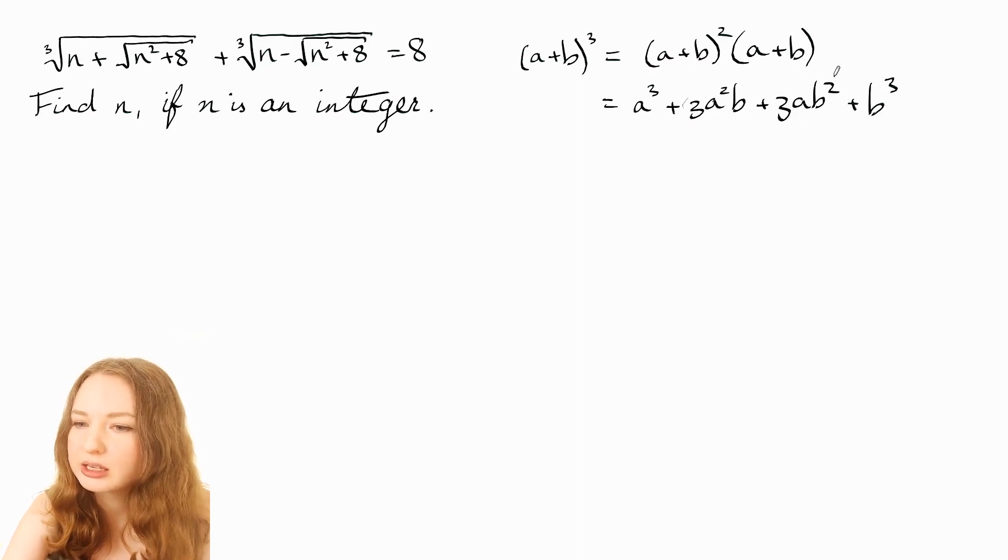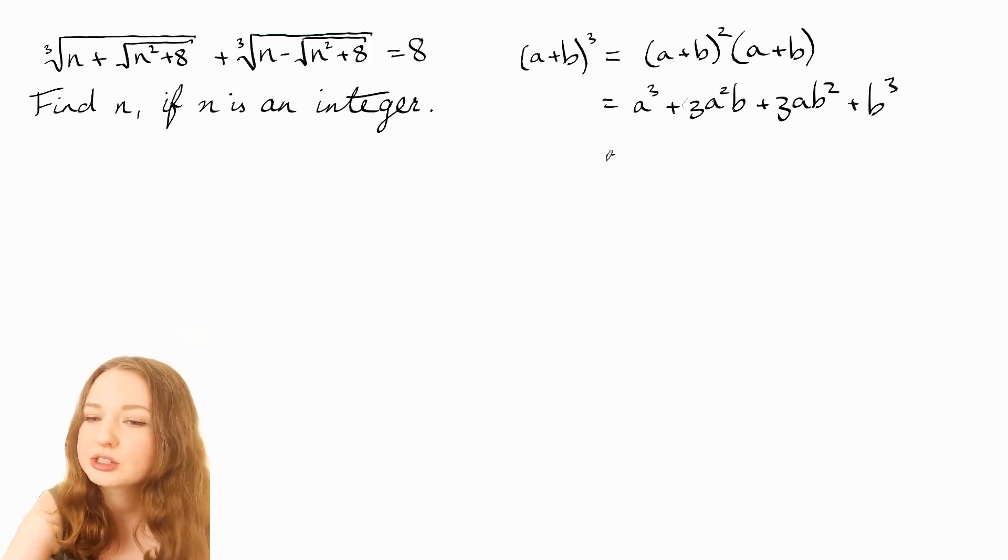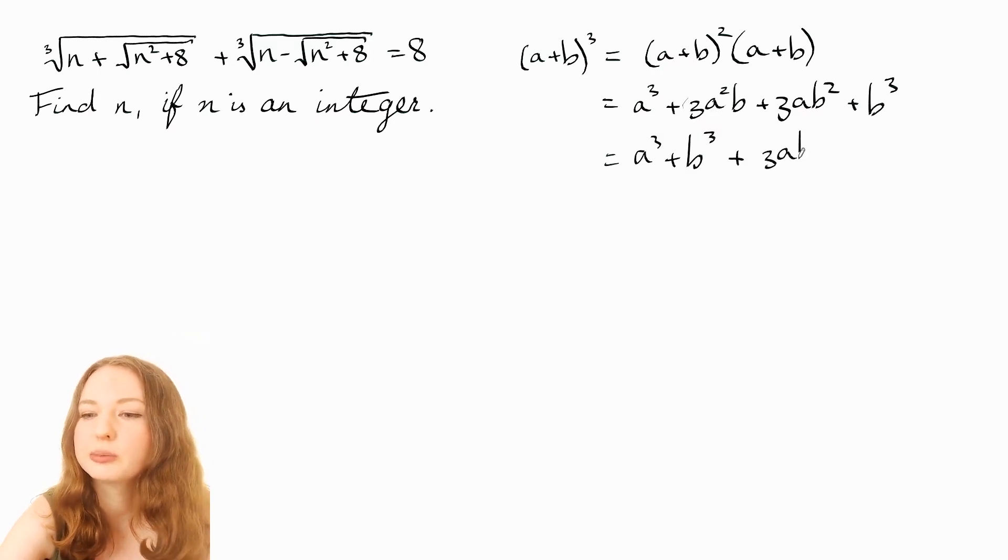Well what we could do is try to factorize this, because there's a lot of common factors there. I mean you've got the three but you've also got the a and b. So let's see what happens if we take the 3ab out of that. Then we're just left with a + b.